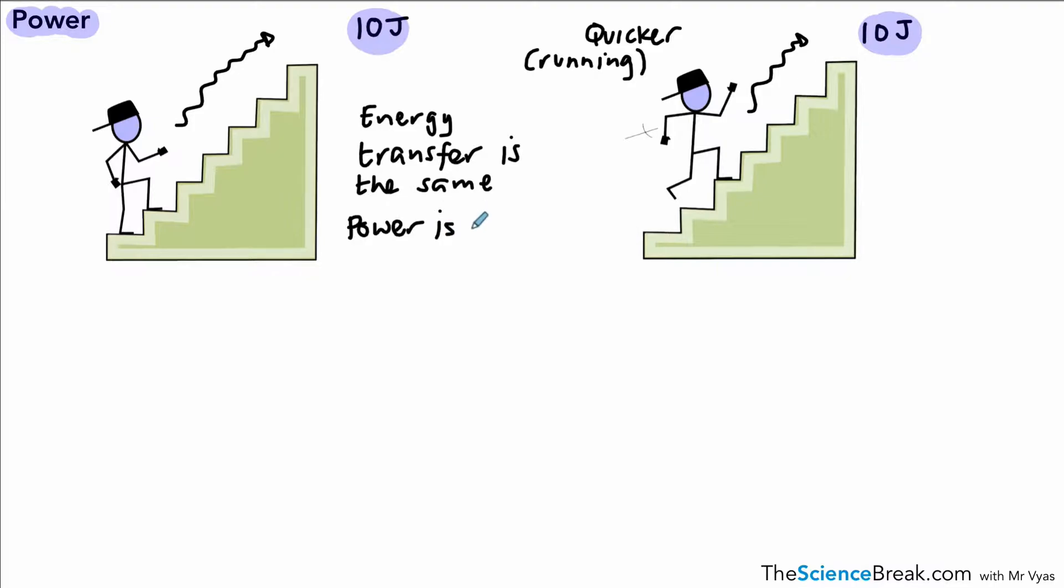The power for each example is different, and that is because when we talk about power, we talk about energy transfer in joules, but we also talk about the time taken. So when we calculate power, we take the time into consideration as well as the energy transferred. In the second example, we associate more power with somebody running up the stairs than just walking, even though the energy transfer is the same, and that's because it was done in a shorter time.